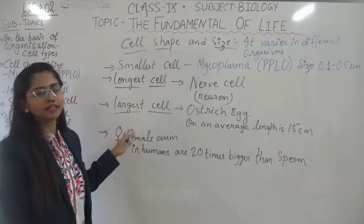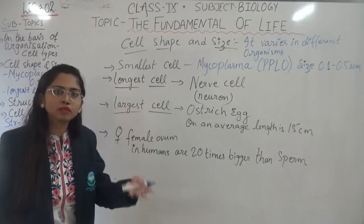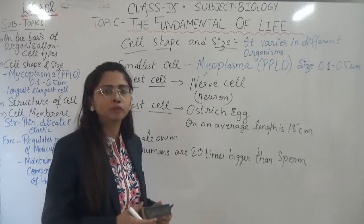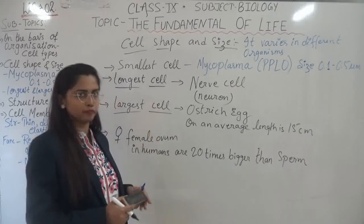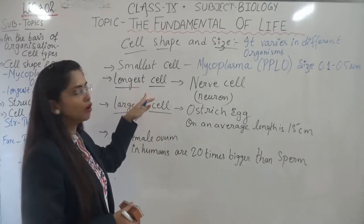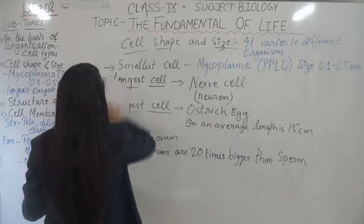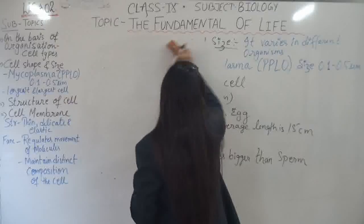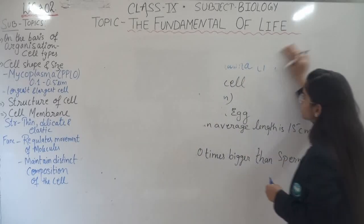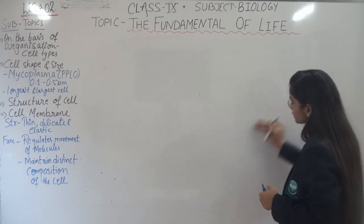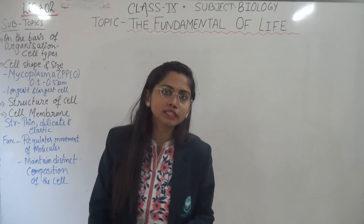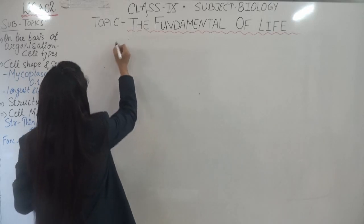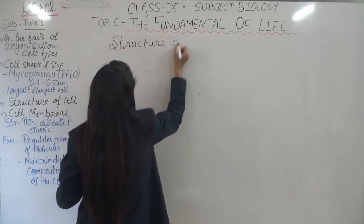So there are different cells, and the size varies. Not all organisms will have the same type or same size of cell. The shape of the cell also tells us about its function — on the basis of function only, they have all these differences. Now, moving to the next topic: the structure of cells. Till now we have understood what a cell is, what its types are, the types of nucleus, and the organisms — eukaryotes and prokaryotes.